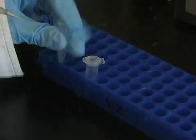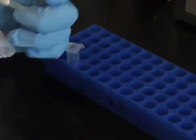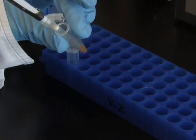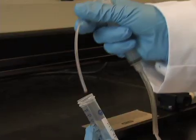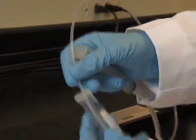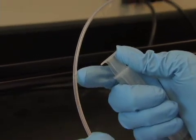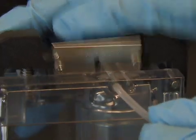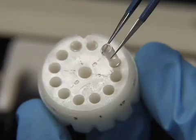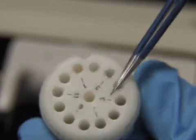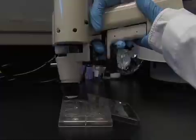The basic steps underlying biolistic transfection are to: 1. Coat gold particles with the DNA to be transfected, 2. Coat the inside of the plastic tubing with this gold, 3. Cut the tubing into cartridges to load into the gene gun, and 4. Shoot the tissue to be transfected.